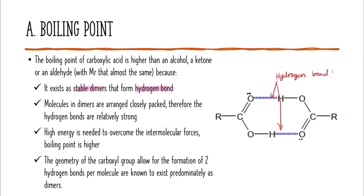Molecules in the dimer are arranged in a closely packed structure, so the hydrogen bonds are relatively strong. Therefore, high energy is needed to overcome the intermolecular forces and the boiling point of carboxylic acid is higher. The geometry of the carboxyl group allows the formation of two hydrogen bonds per molecule, and it is known to exist predominantly as dimers.